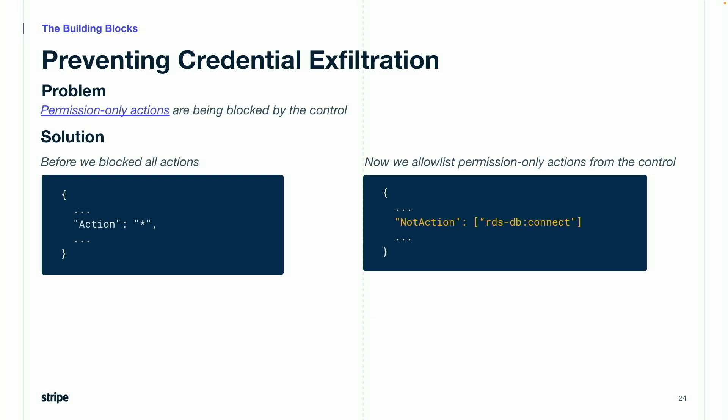The third problem is permission-only actions, which are often blocked by the SCP. Permission-only actions are actions that don't directly correspond to an API operation. One that cloud security talks about a lot is pass role — fortunately, pass role is not affected by the SCP, but many other permission-only actions are. I've added the actions we found that break during testing to the appendix. The one I put here as an example is used for connecting to an RDS database using IAM authentication. To exclude these actions, instead of targeting all actions, we allow-list them using the not-action keyword.